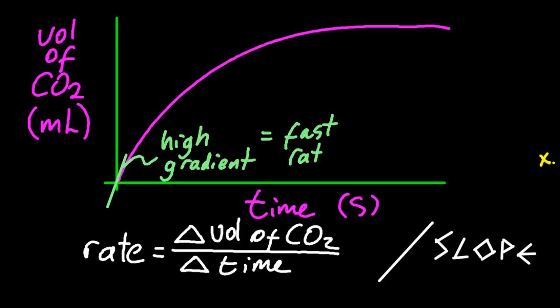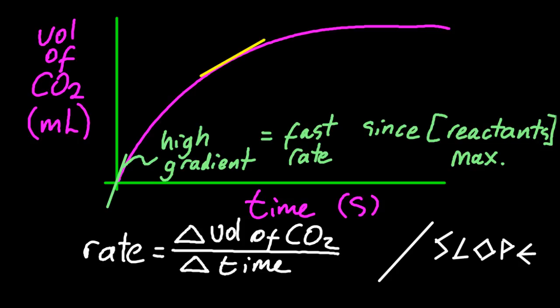Notice at the beginning is the highest gradient, the highest slope, which means a fast rate, and that's because the reactant concentration there is at its highest. So there's going to be more collisions per unit time since the reactants are at the highest concentration.